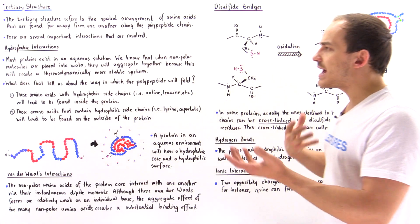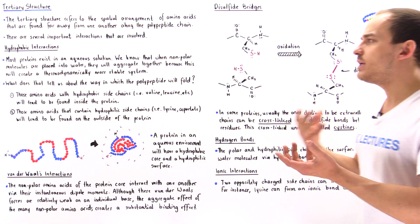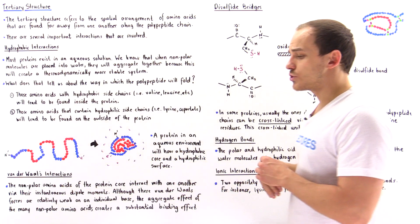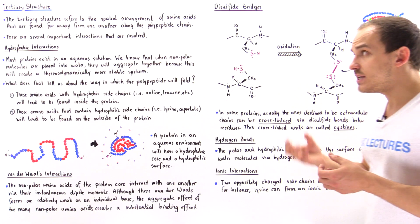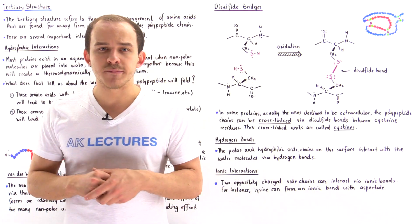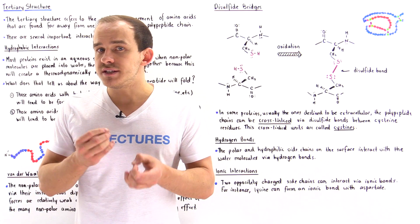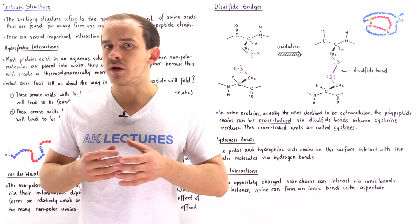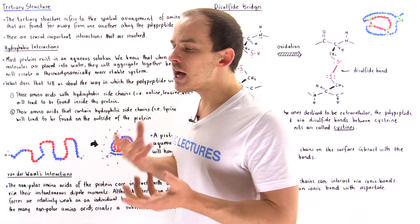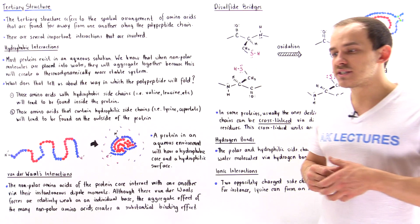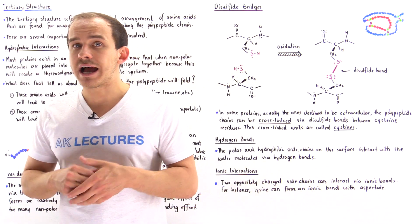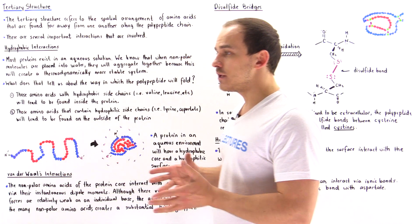What does that have to do with the folding of proteins and the formation of the tertiary structure? Remember that proteins, our polypeptides, consist of 20 different types of amino acids, and these amino acids differ from one another based on their sidechain group. We have different types of sidechains — non-polar sidechains, which are hydrophobic, and polar sidechains, which are hydrophilic.